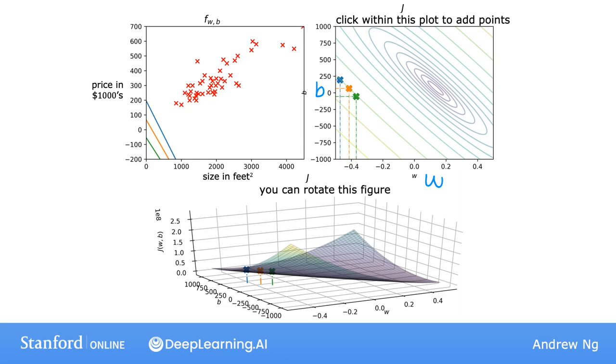shows is the set of points on the 3D surface which are at the exact same height. In other words, the set of points which have the same value for the cost function j.